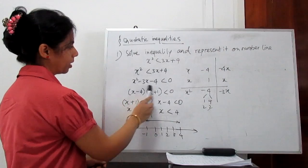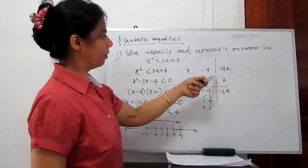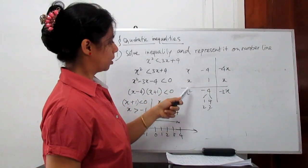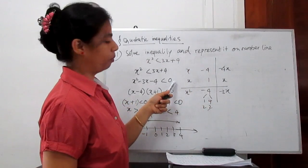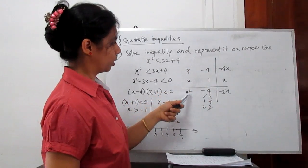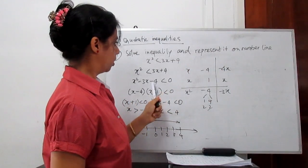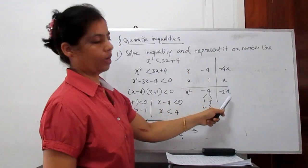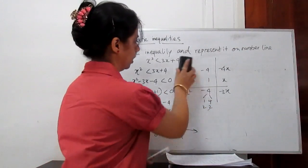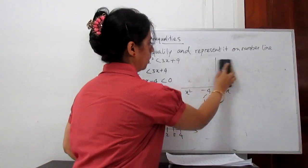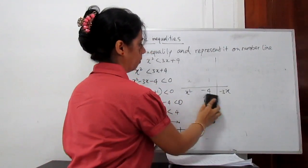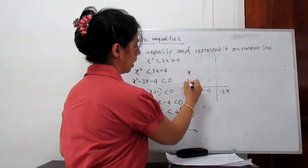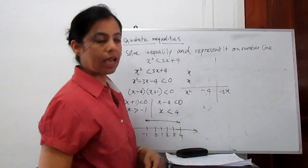When we factorize this — you already learned how to factorize — just make a simple table with x squared and the coefficient of the constant term and coefficient of x. With the help of this, we can find the factors.